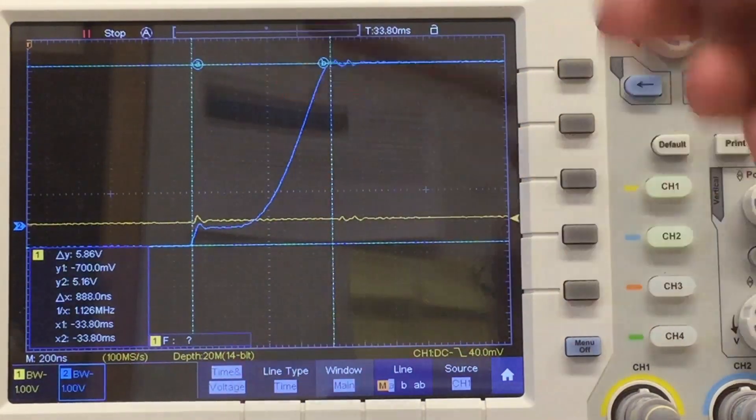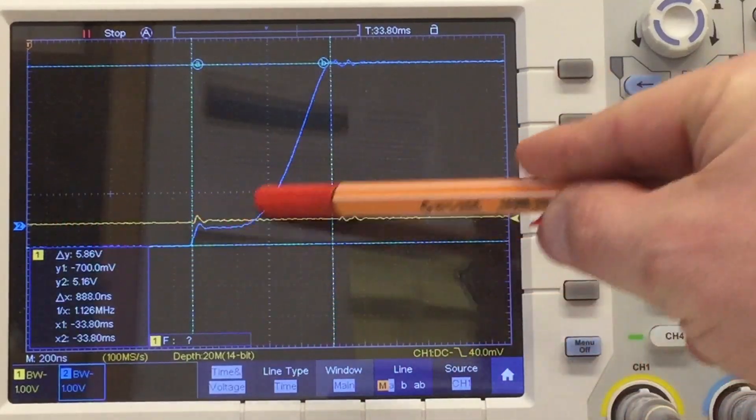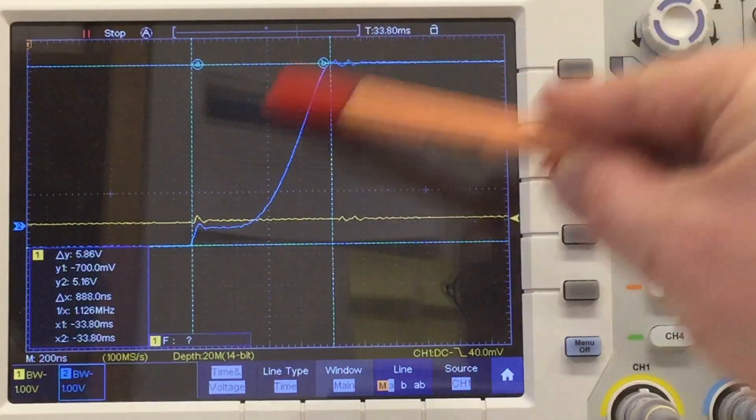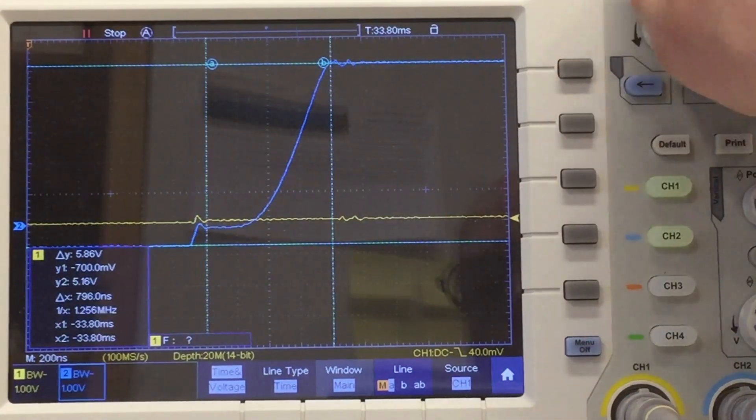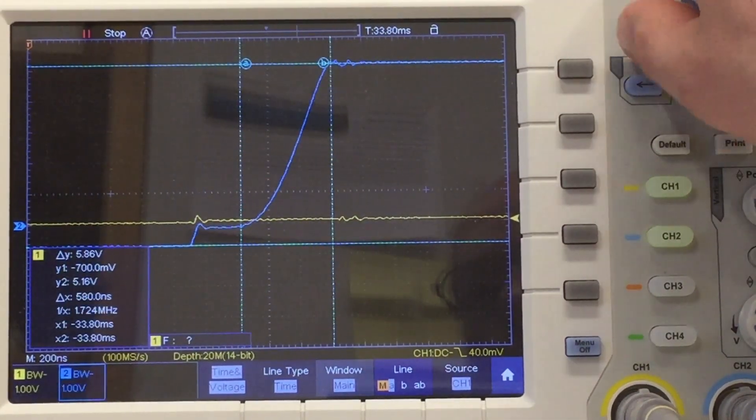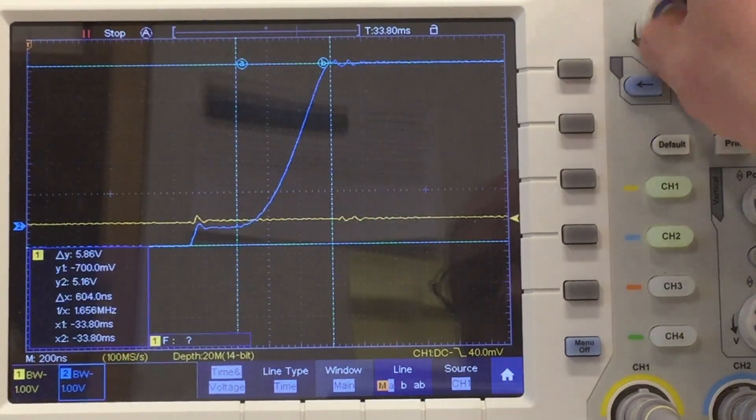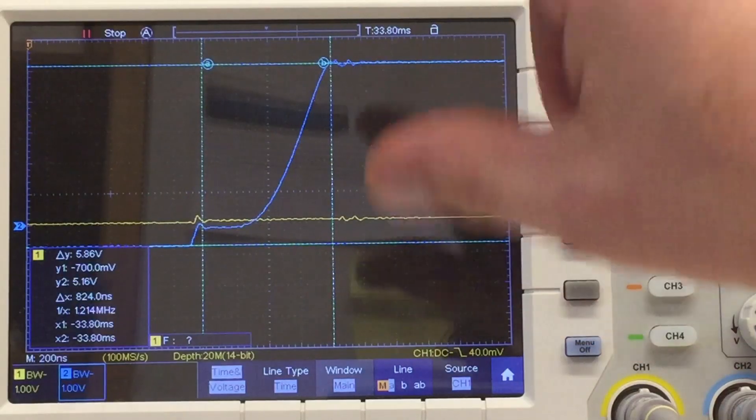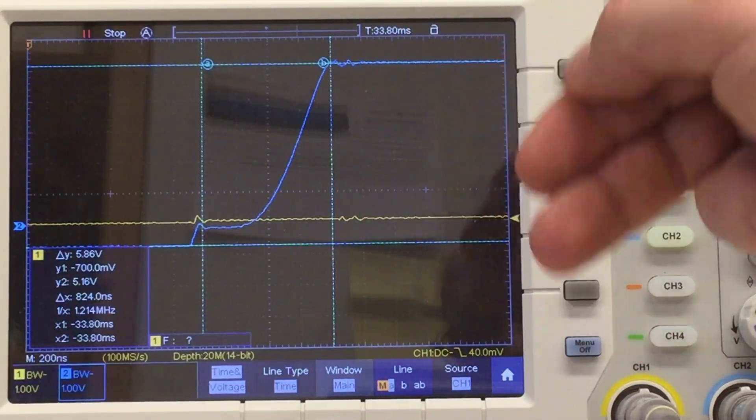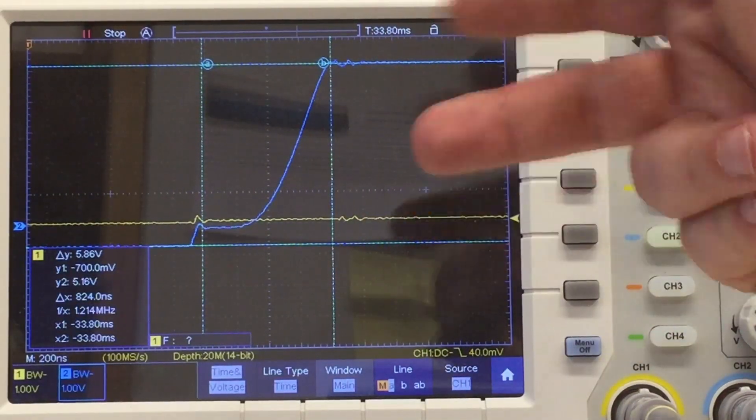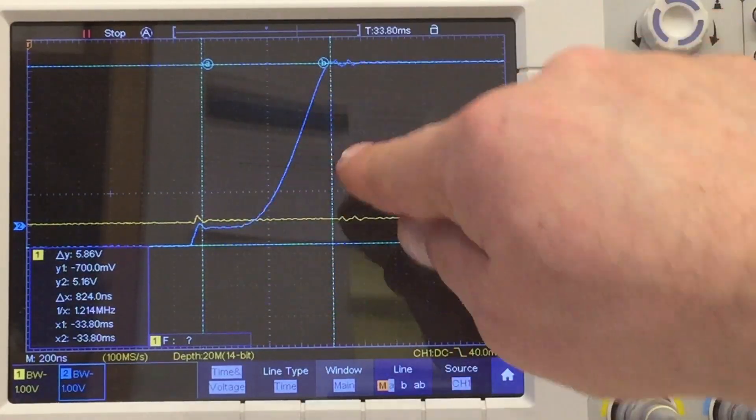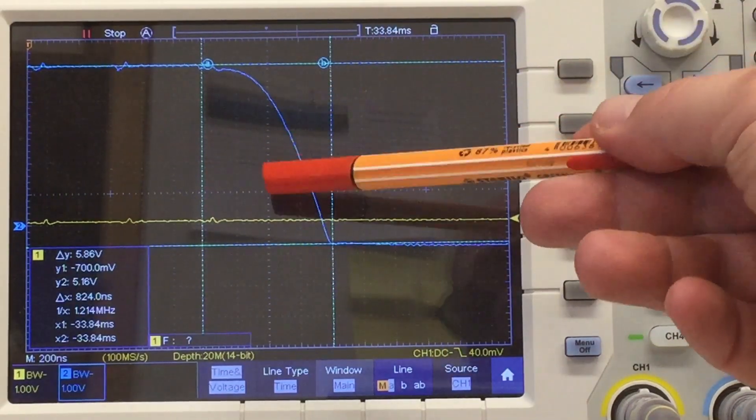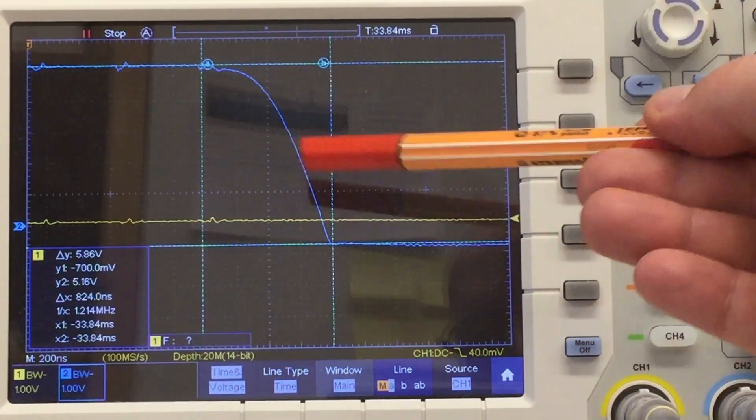While we're at it, the rising edge from the O1 is about—depends how you calculate it—between 7.5 and 10 volts per microsecond. That's well within the maximum limit specified in the RS232 specification of 30 volts per microsecond. The falling edge is 7.5 volts per microsecond, also okay.